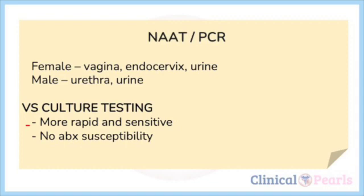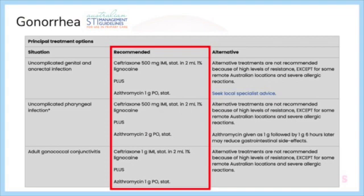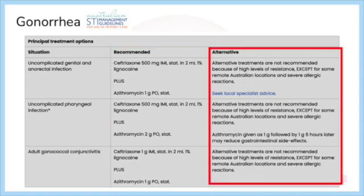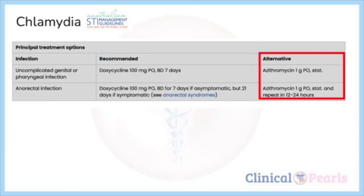Patients should be counseled about prompt treatment after a positive screening test, because an additional test might be falsely negative. Since the treatment of Chlamydia trachomatis and Neisseria gonorrhoeae is safe and relatively inexpensive, the patient might choose to be treated empirically without further testing, or wait for the repeated test result. The answer is E — counsel her about treatment. Based on the Australian guidelines, the recommended treatment for gonorrhea is ceftriaxone plus azithromycin. Alternative treatments are not recommended. The recommended treatment for chlamydia is doxycycline, while the alternative is azithromycin.